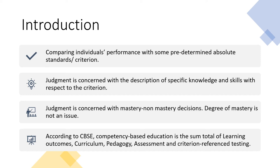Now we relate this example to criterion reference interpretation of students' test scores. The definition: when an individual's performance is compared with some pre-determined absolute criterion or standard, that is criterion reference interpretation. We set the criterion first, then compare the student's performance with that criterion.